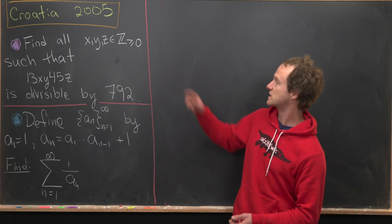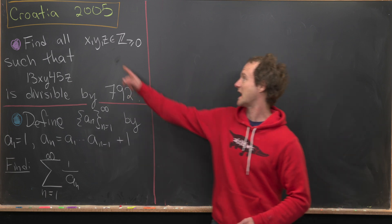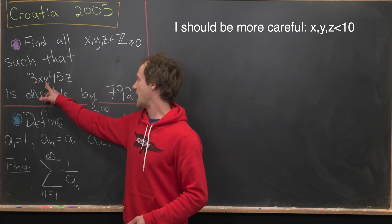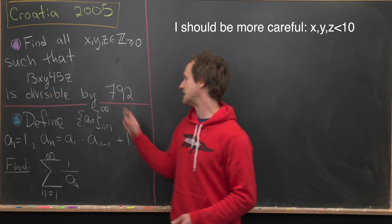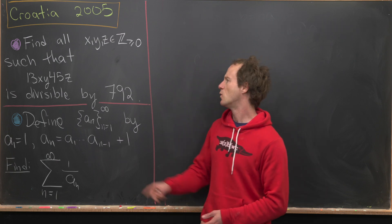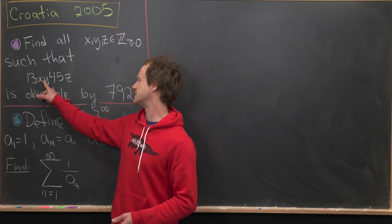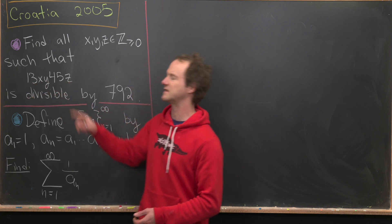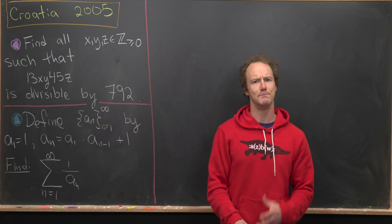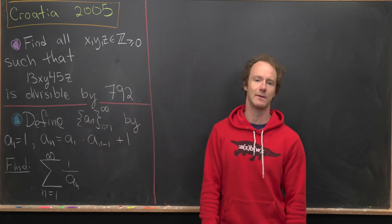First, we want to find all non-negative integers x, y, and z such that the number 13xy45z is divisible by 792. What I mean is not 13 times x times y times 45 times z — x, y, and z are missing digits from this seven-digit number.